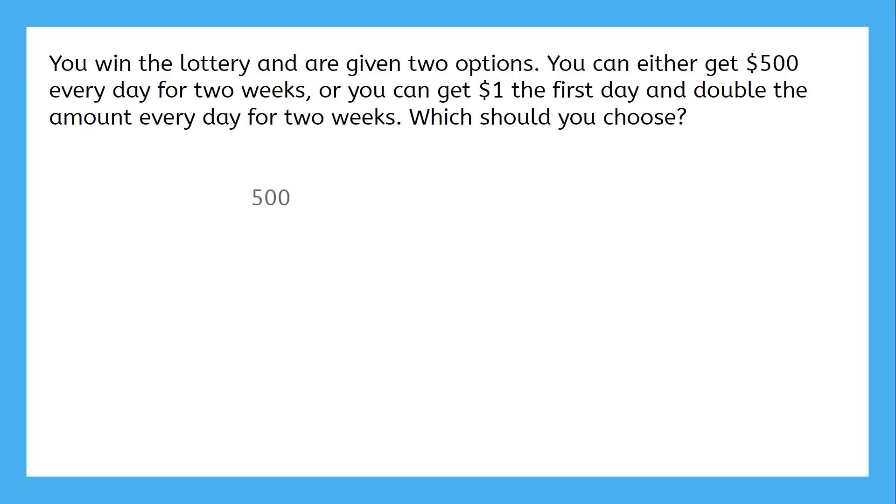For the first option, you receive $500 at first, then add another $500 thirteen more times, resulting in a linear expression that totals $7,000. In the second option, you start with only $1, but then it doubles 13 times, creating an exponential expression equaling $8,192. So the exponential option, despite how bad it first sounded, actually ended up being the better one. But how?